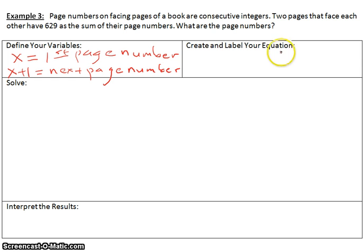Now we have to create and label our equation. We don't know what the first page number is, so we will leave that as X. And it tells us here two pages that face each other have 629 as the sum of their page numbers. So we would take the first page number plus the second page number, and that should equal 629.